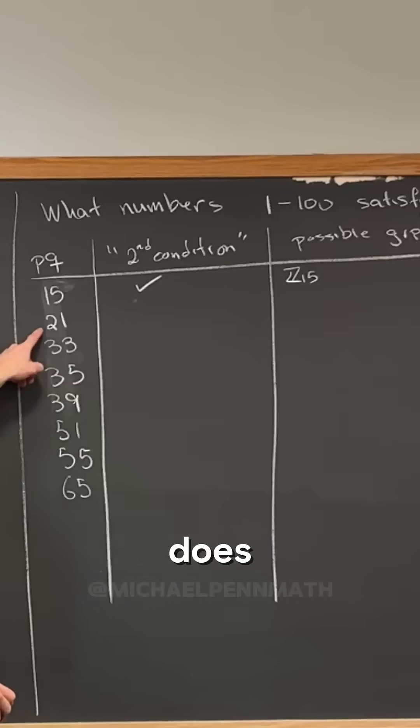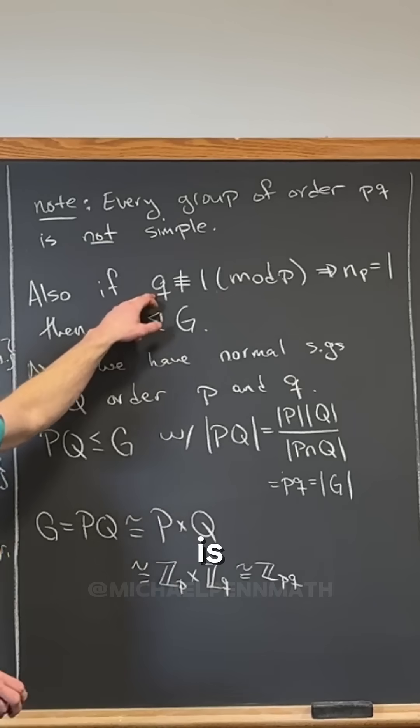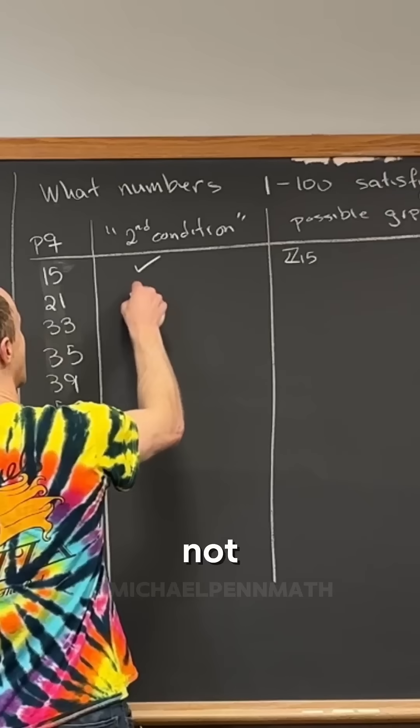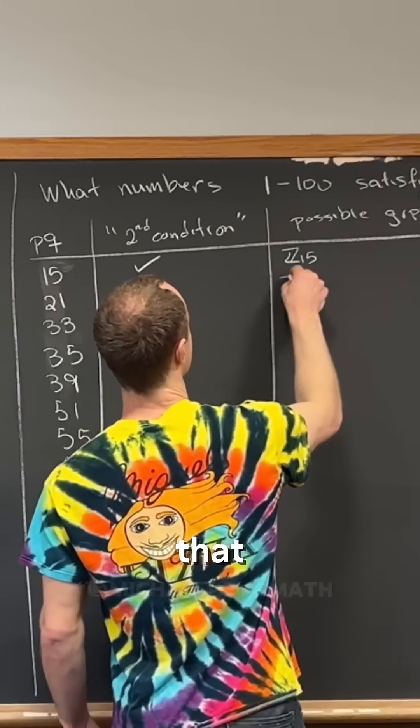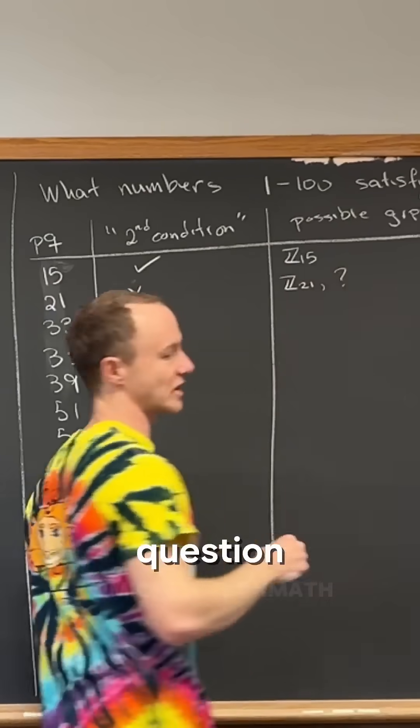Now what about this? Does 21 satisfy the second condition? No, because seven is congruent to one mod three, right? So no, this does not. So that means here you've got Z21, question mark.